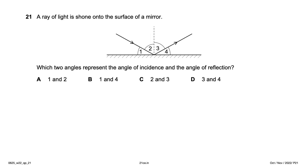A ray of light is shown hitting the surface of a mirror. Which two angles represent the angle of incidence and the angle of reflection? This is straightforward: angles 2 and 3 represent the angle of incidence and angle of reflection respectively — option C.